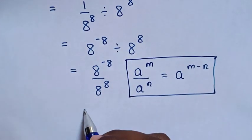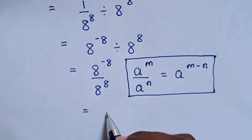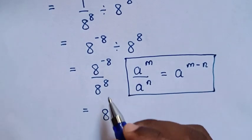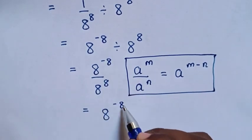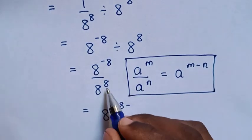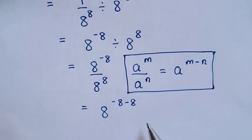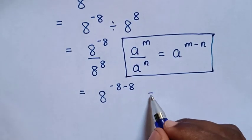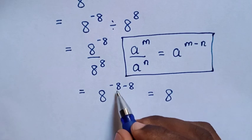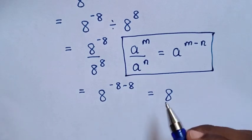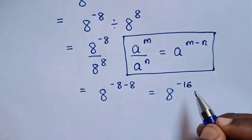Then it will be equal to 8 power of negative 8 minus power of 8. So it will be equal to 8 power of negative 8 minus 8, which is 8 power of negative 16.